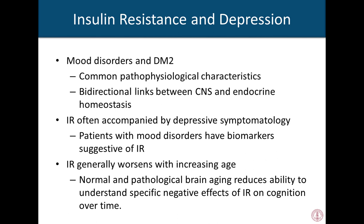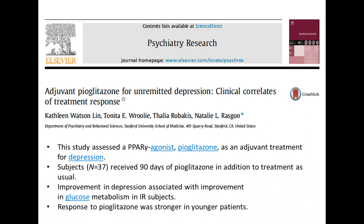One of the more intriguing findings is that the age at which insulin resistance may affect mood disorders is unfortunately moving to younger ages. A study which is still ongoing suggests that even in adolescents with depression, we can already see neural correlates of insulin resistance. Suffice to say that insulin resistance is often accompanied by depressive symptomatology, and patients with depression have biomarkers associated with insulin resistance.